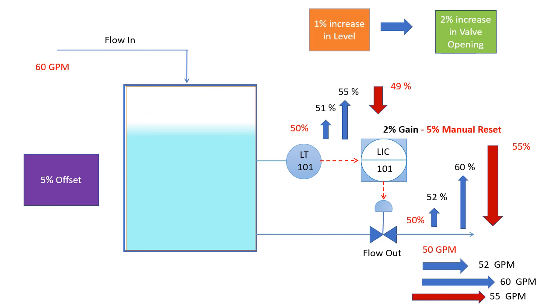So this is the concept of manual reset and how we can make the offset zero in the case of the proportional controller.